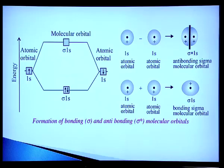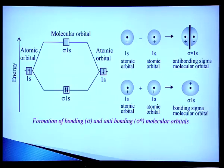For He₂: each helium has configuration 1s², so two helium atoms provide 4 electrons. Two go into the bonding molecular orbital and two into the anti-bonding molecular orbital. Bond order = ½(2 − 2) = 0, so He₂ does not exist. Molecular orbitals formed by addition of atomic orbitals are of lower energy and are called bonding orbitals; those formed by subtraction are of higher energy and called anti-bonding molecular orbitals. Molecular orbitals symmetric around the bond axis are called sigma molecular orbitals, denoted σ1s (bonding) and σ*1s (anti-bonding).